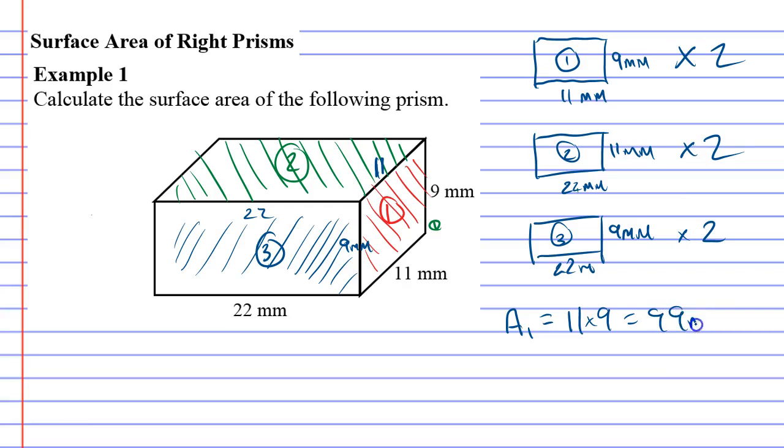Or 99 millimetres squared. A2 for rectangle 2, which is a 22 by 11. 22 times 11, which comes out to 242 millimetres squared. And then the last one, rectangle 3, is 22 by 9, which is 198 millimetres squared.